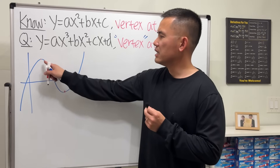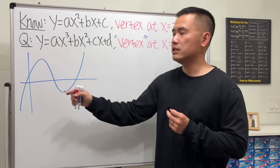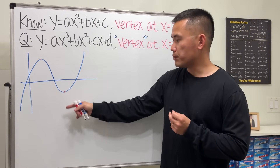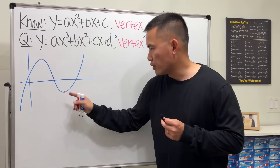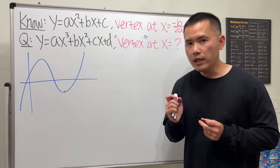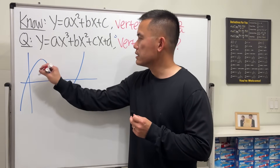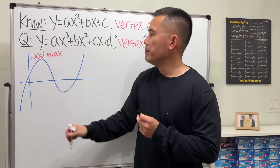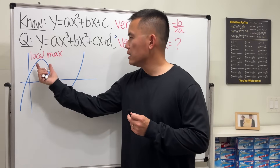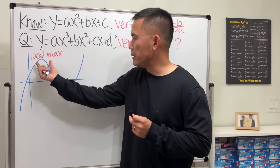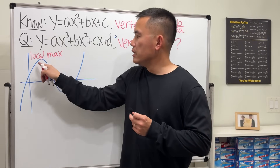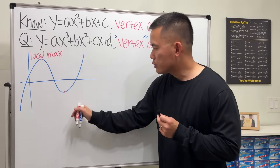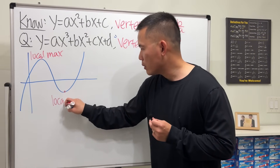This is not the highest point, because the graph keeps going up. And this is not the lowest point, because you can see that is certainly lower than that. The correct term I should be using is: this is a local maximum, because locally speaking — if you narrow it down to maybe this region — this is the highest point. Similarly, this right here is called a local minimum.